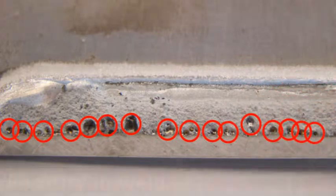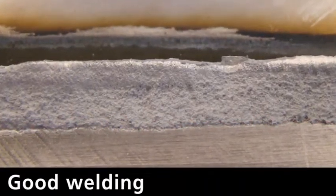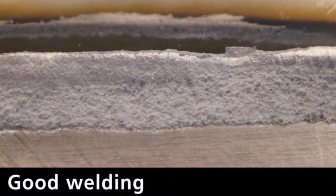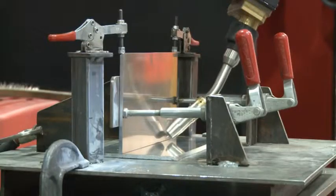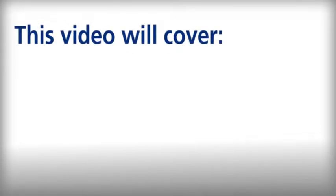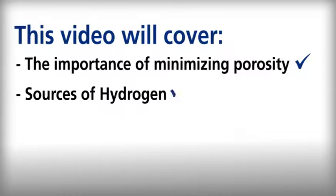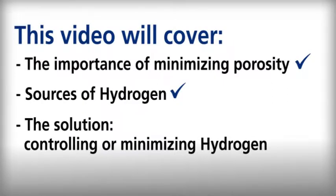Even the cleanest weldment will produce welds with some hydrogen because there's always hydrogen in the environment. It's impossible to perfectly clean everything, but you can take precautions that will make a significant difference in the quality of your welds. This video will cover the importance of minimizing porosity, sources of hydrogen, and the solution for controlling or minimizing hydrogen.